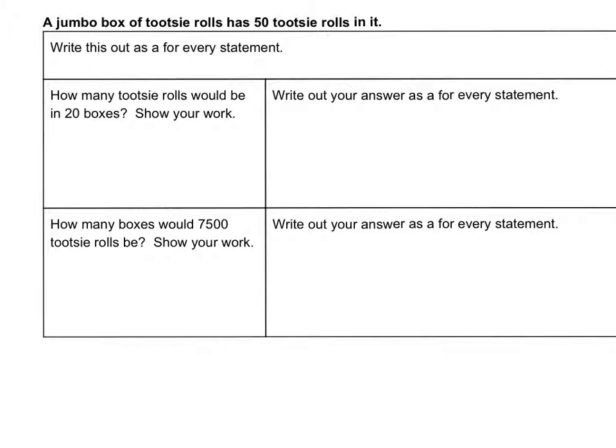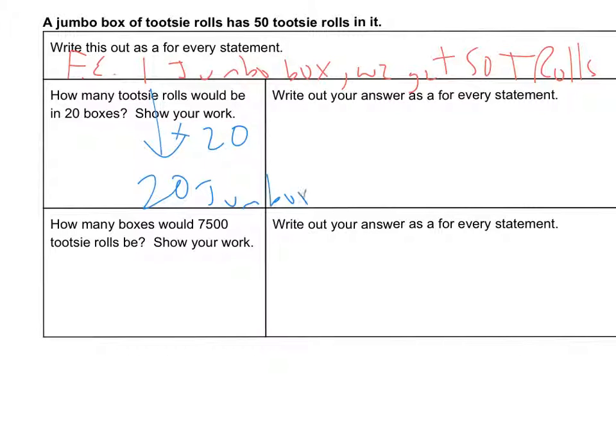And problem 2 says, a jumbo box of Tootsie Rolls has 50 Tootsie Rolls in it. So for every 1 jumbo box, we get 50 Tootsie Rolls. And the question comes, how many Tootsie Rolls would be in 20 boxes? So we're going from 1 to 20, which means we're multiplying. We're getting bigger. So 20 jumbo boxes, we get times 20. 5 times 2 is 10, with 2 more zeros, is 1,000 Tootsie Rolls.